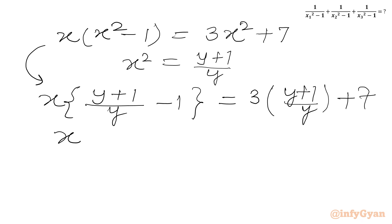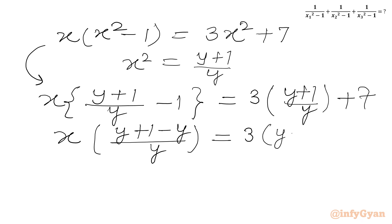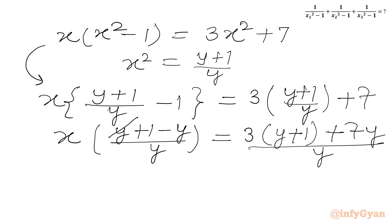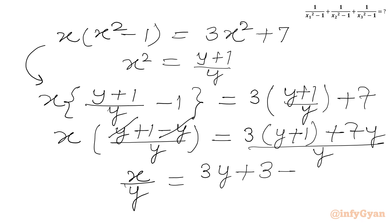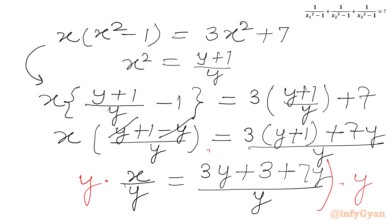Simplifying the bracket on the LHS: (y + 1 - y)/y equals 1/y. On the RHS we write [3(y + 1) + 7y]/y, which gives (10y + 3)/y. The plus y and minus y cancel on the LHS, giving x/y on the left. Multiplying both sides by y, we get x equals 10y + 3.